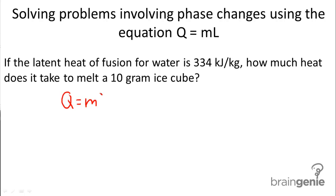Our equation is Q equals m times L. Our mass is in grams, it's 10 grams, and we need to convert that to kilograms, and that's the same as 0.01 kilograms. Our latent heat of fusion is 334 kilojoules per kilogram.